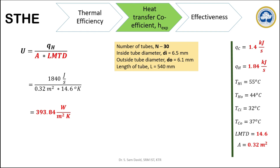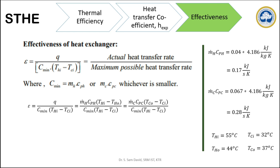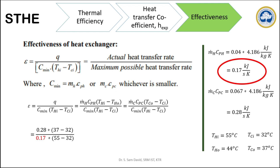Now we move on to the next objective: finding the effectiveness of the heat exchanger, which is given by this formula. The key point here is C_minimum in the denominator of this equation. We have to calculate the product of mass flow rate and specific heat capacity for both the hot fluid and cold fluid, and whichever is smaller is used as C_minimum. Multiplying with the corresponding Cp value, we get the MC products. From these two values, we can see that the hot fluid MC product value is lower. Hence, we substitute the corresponding value and calculate the effectiveness of this heat exchanger, which comes to be 0.36.